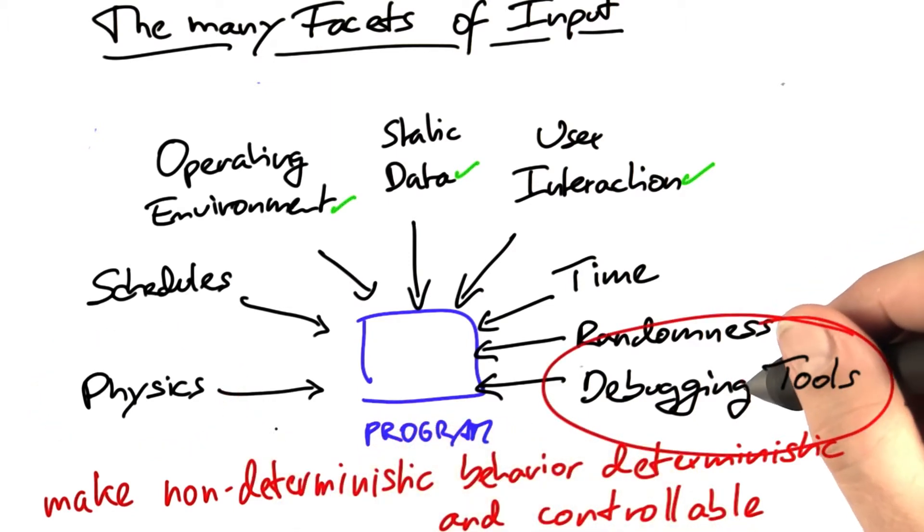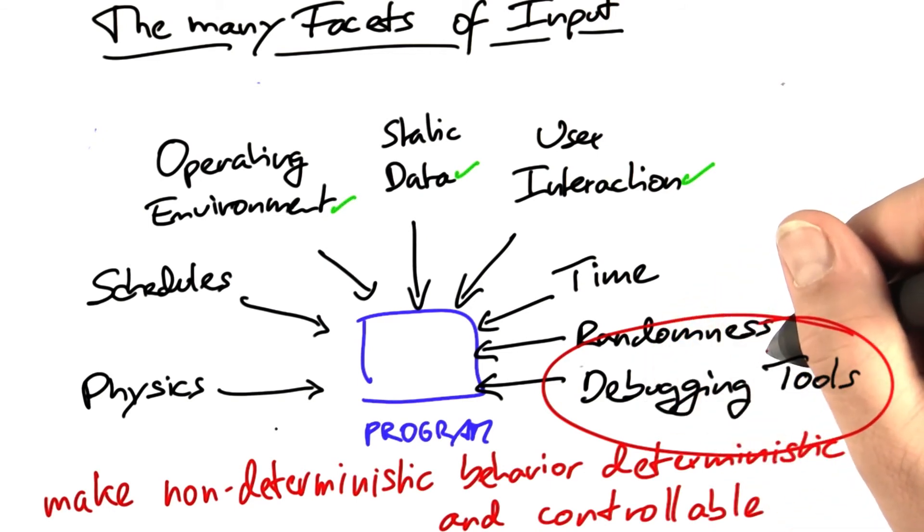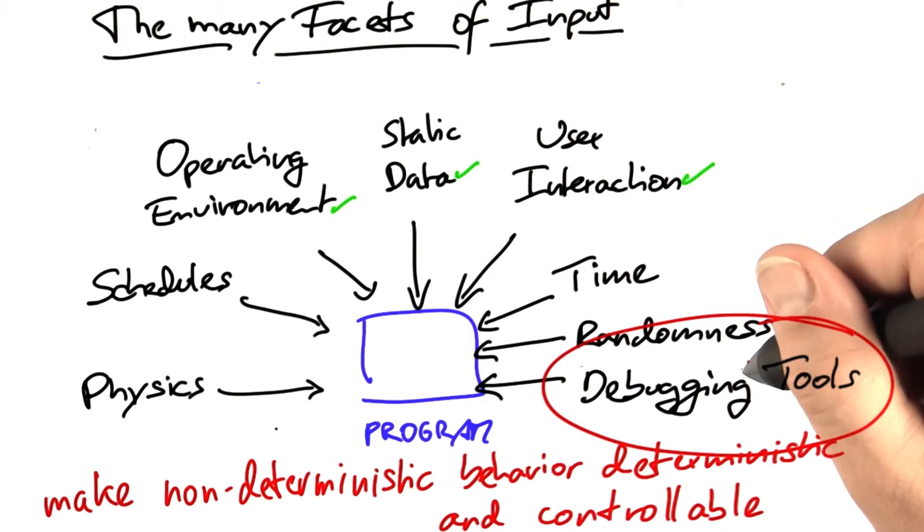Fifth, debugging tools. Debuggers instrument the code and alter its execution. The least they do is to influence the real timing. Therefore, they may induce Heisen bugs—bugs that appear or disappear when being observed.